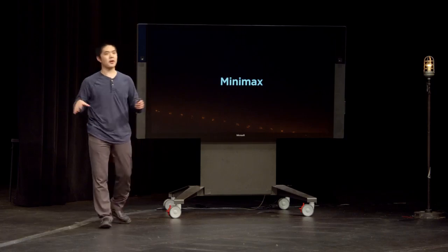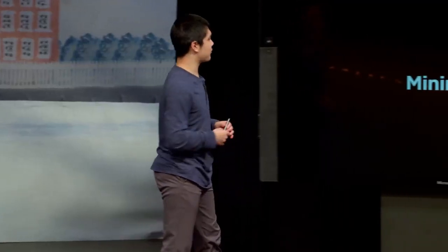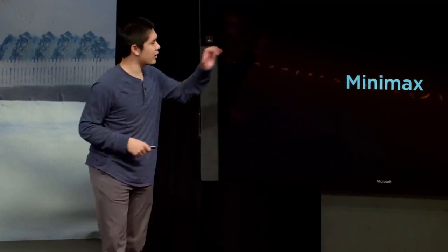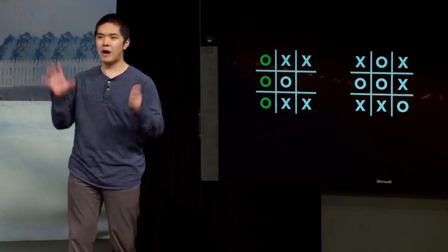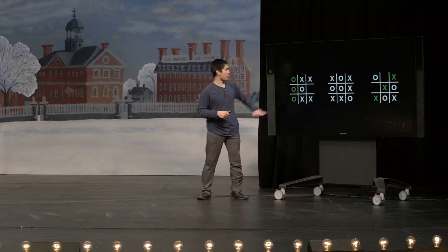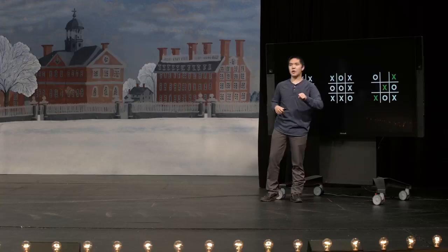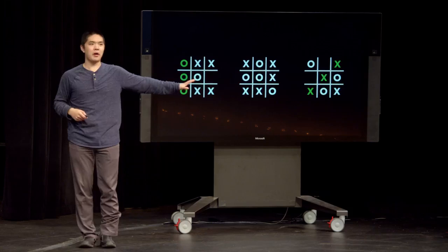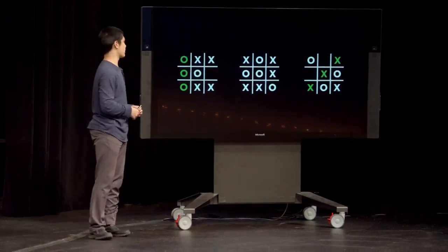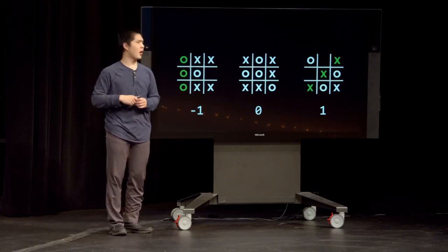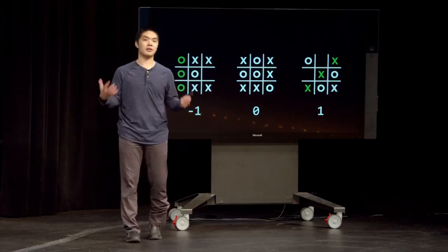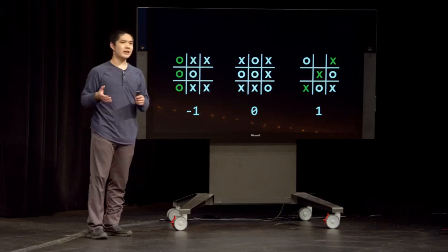As we've seen throughout CS50, we need some way of representing this game inside of the computer — taking everything and representing it just with numbers. As far as our AI is concerned, there are only three possible outcomes: O wins, X wins, or it's a tie. We take each of these three possible outcomes and assign a number. O winning is negative 1, X winning is 1, and a tie is 0 — somewhere in between the two.